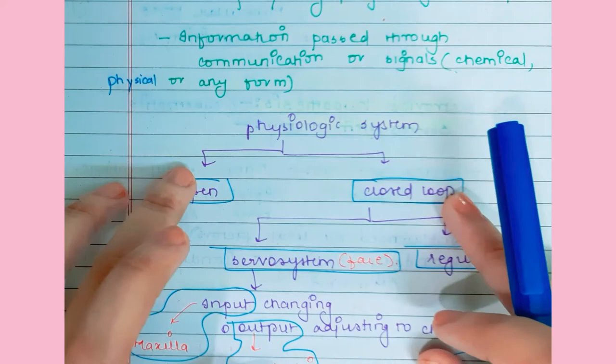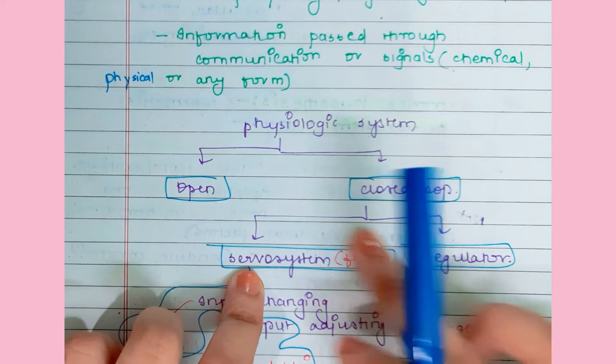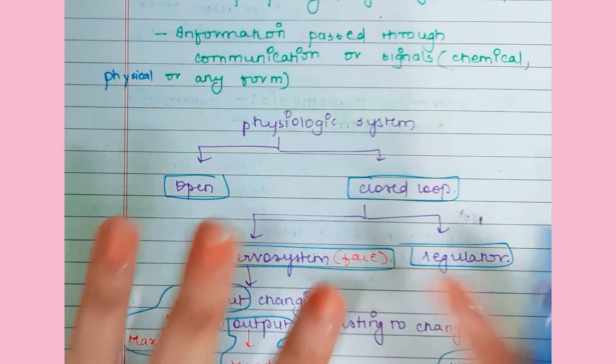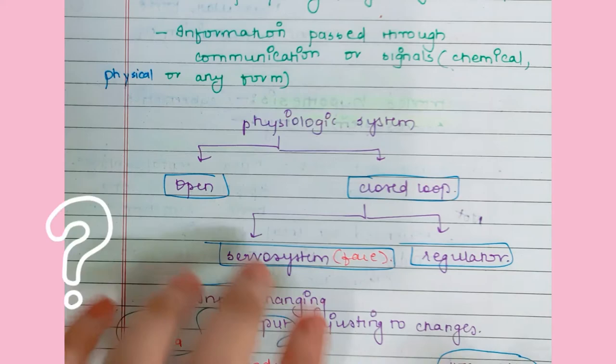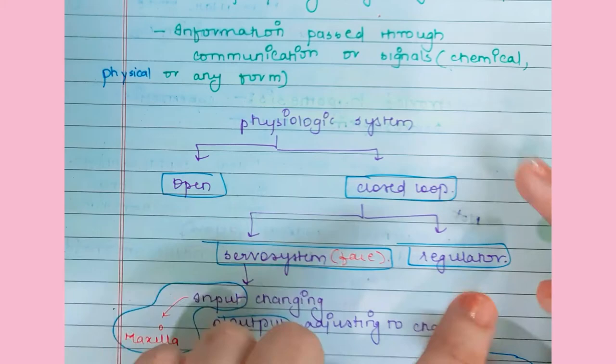We divide the physiological system into open and closed loop. The closed loop has a servo system — here our servo system is the face, the craniofacial components. This theory is very important because it underlies the application of myofunctional appliances. Understanding this theory helps you realize the actual concept behind myofunctional appliances and why they are given mostly in Class 2 cases. Systems work in positive and negative feedback mechanisms.